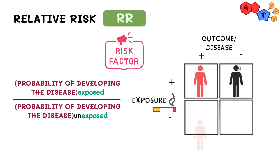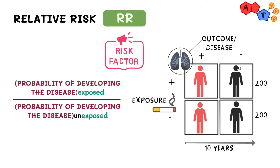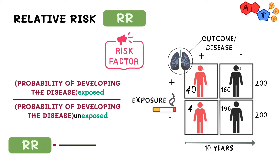It's a lot easier to understand with an example. Suppose we have 200 smokers and 200 non-smokers. After 10 years, 4 non-smokers developed lung cancer, meaning 196 didn't. As for the smokers, 40 developed lung cancer, meaning 160 didn't. Therefore, the probability of developing cancer if you're a smoker is 40 over 200 — smokers with lung cancer over all smokers — or 20%. This will be our numerator. The probability of developing cancer if you're a non-smoker is 4 over 200, or 2%. This will be our denominator.